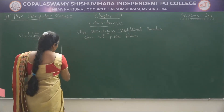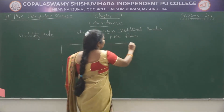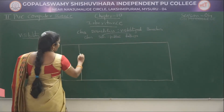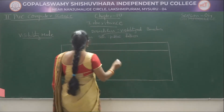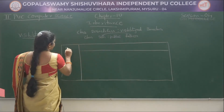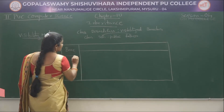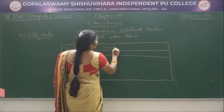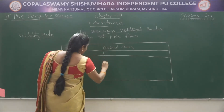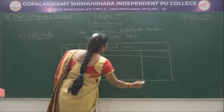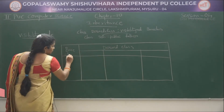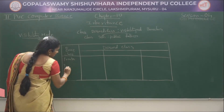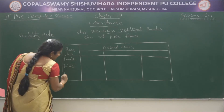If you write this chart, it will be easy to remember how visibility mode works. First, take the base class column, then the derived class column. In the base class we have private, public, and protected. In the derived class we also have private, public, and protected headings.